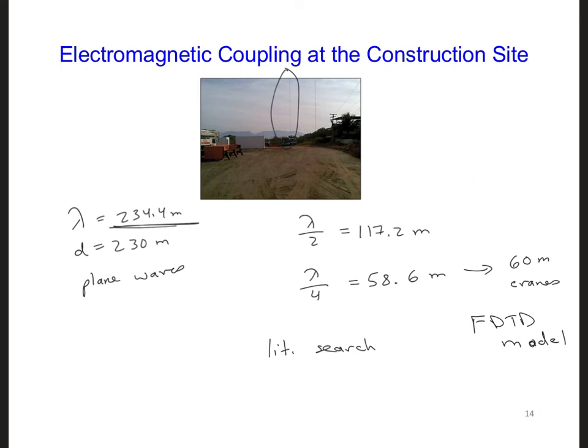For example, would your FDTD model be 1D, 2D, or 3D? What boundary conditions would you use on the edges of your grid? Does the grid need PML? What would you use for your source? How would you model the crane?